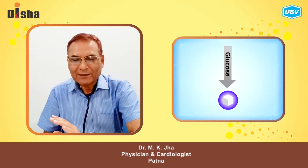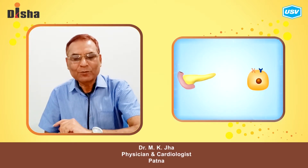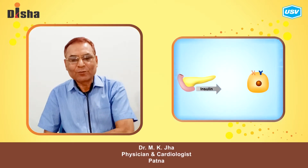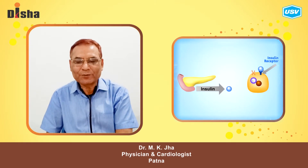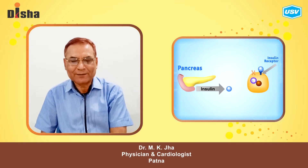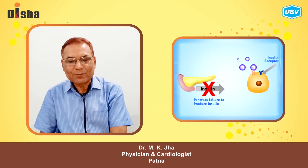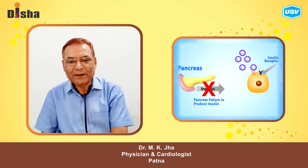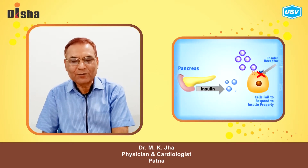The pancreas makes insulin, a hormone which helps glucose from food get into your cells to be used for energy. Sometimes your body doesn't make enough or any insulin, or does not use insulin well.